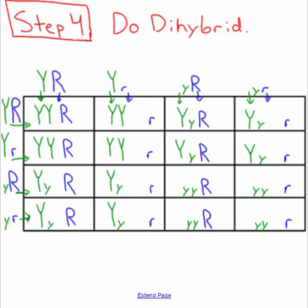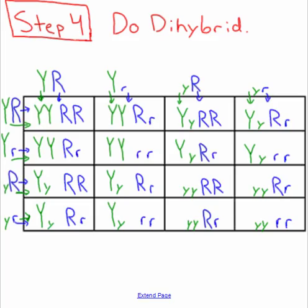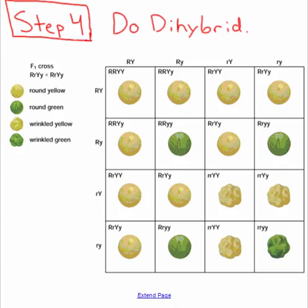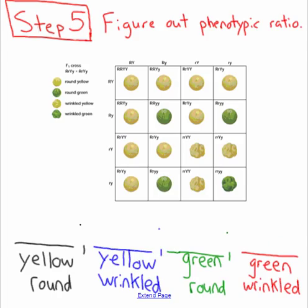I bring my Y's across from mom — I left some room so I can put the Y's together — and then my R's come across from mom. Just like a regular Punnett square: bring letters down, bring letters across. This is the completed Punnett square showing our results, and it actually shows the different types of seeds. The last step is to determine our phenotypic ratios.